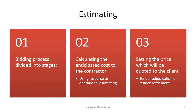The bidding process is divided into stages. The first stage is calculating the cost to the contractor or subcontractor, and this is usually based on the cost of labour, materials and plant. This price is then converted to the bid price to be submitted to the client, based on a number of factors that will be discussed later.